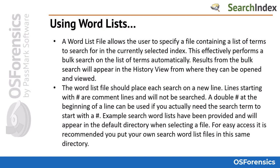Lines starting with a pound sign are comment lines and will not be searched. A double pound sign at the beginning of a line can be used if you actually need the search term to start with a pound sign. Example search word lists have been provided and will appear in the default directory when selecting a file. For easy access, it is recommended you put your own search word list files in this same directory or replace those that are pre-installed with OS Forensics.